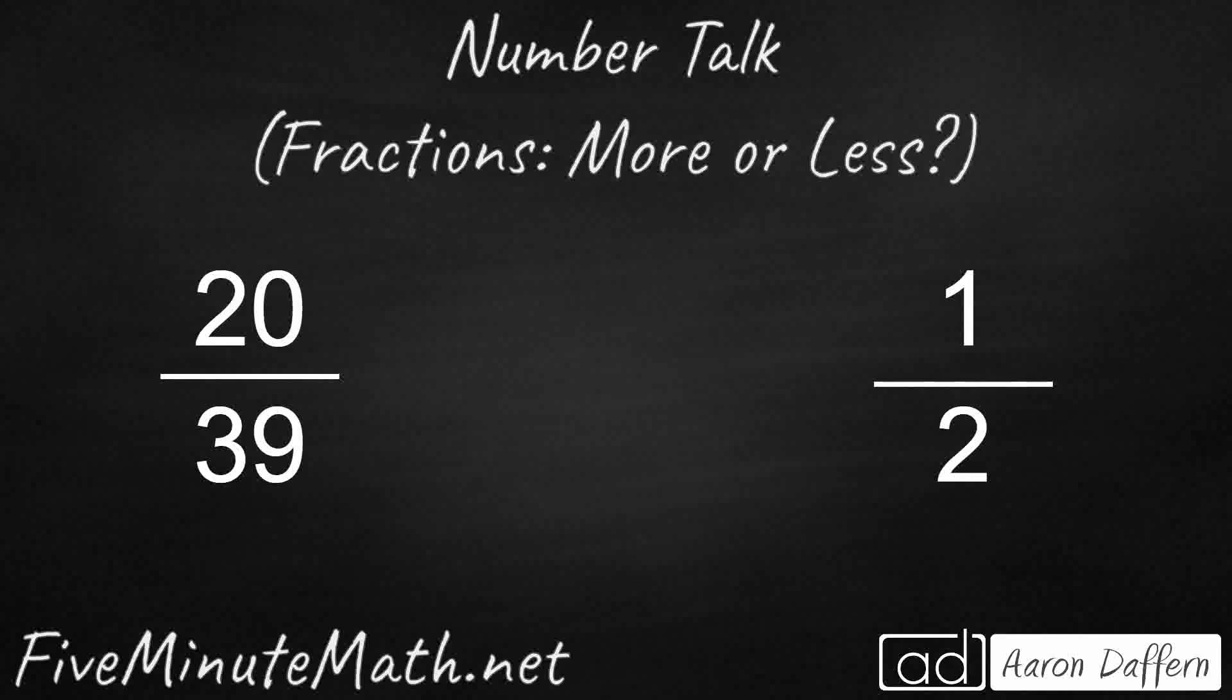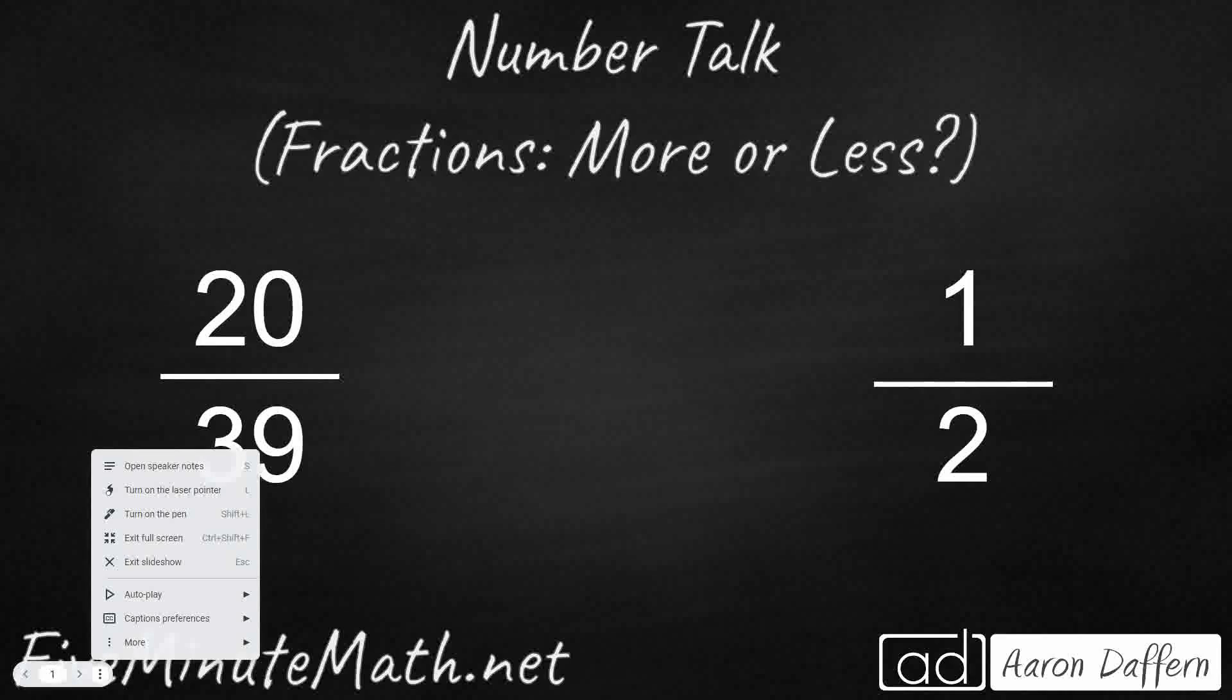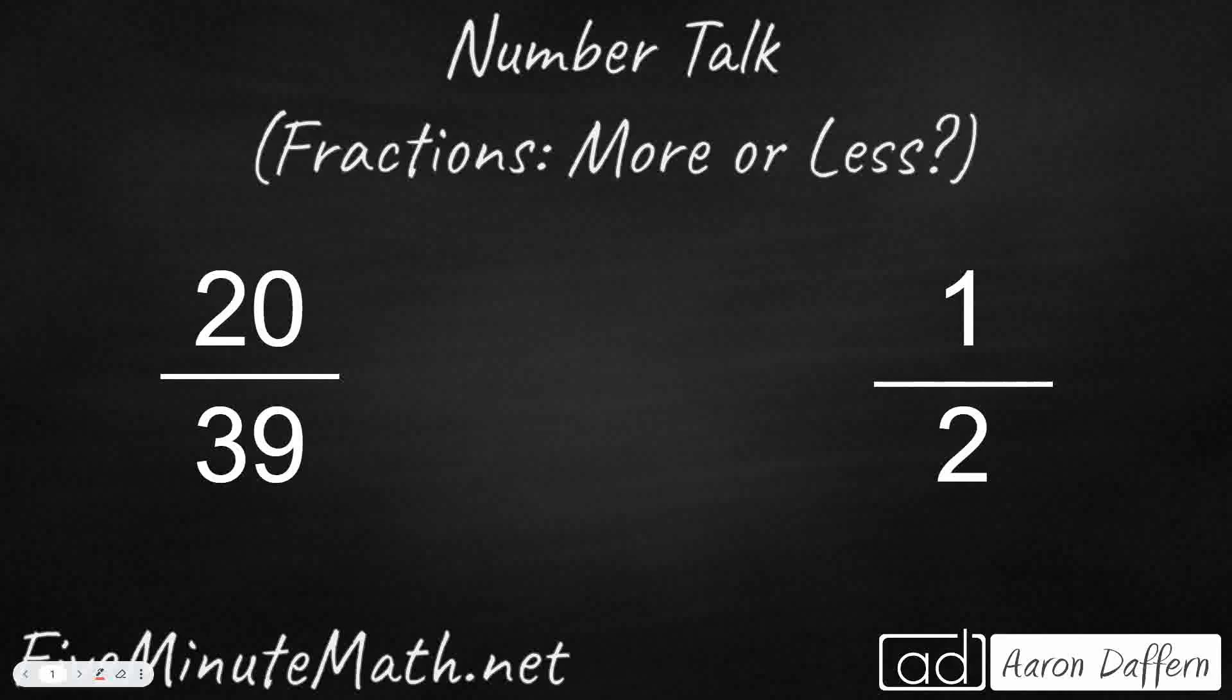Well, one way to think about this is to think about that 1 half. And when we double 1 half, we know that 2 halves make a whole. In this case, it's going to be 2 halves, right? We know that equals 1.